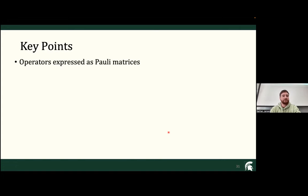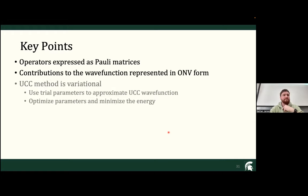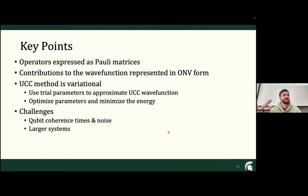Key points: our operators are being expressed as Pauli matrices; our contributions to the wave function are represented in occupation number vector form; UCC is variational, so we use trial parameters to approximate our UCC wave function and optimize parameters to minimize the energy; and the challenges are coherence times, noise, and scaling to larger systems.